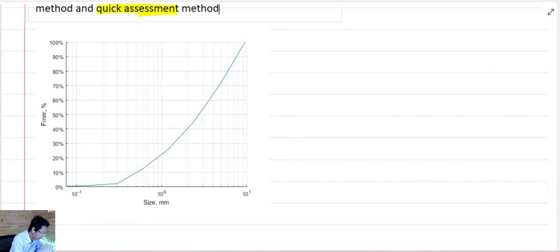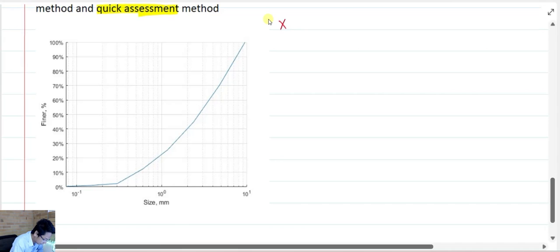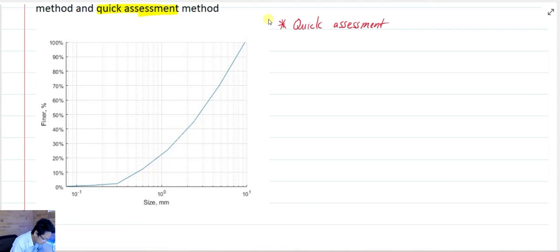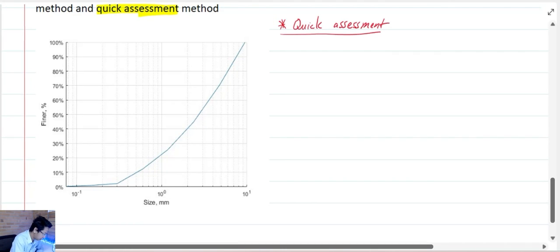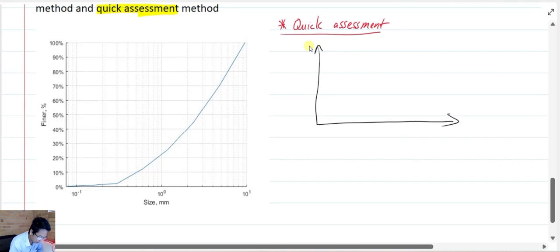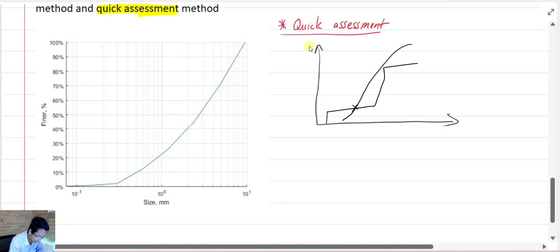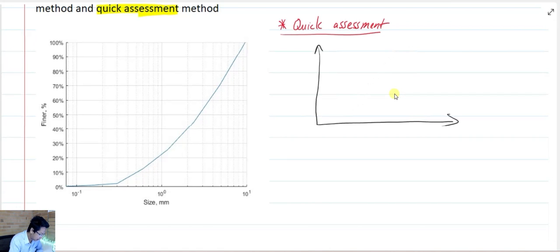Now let's move to the quick assessment method. The idea of quick assessment method is that it is based on the slope of the soil. So you know that with the same grain size, a soil can be continuously graded like this, or it can be gap graded like that.